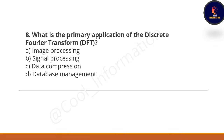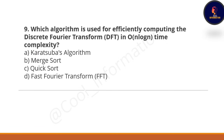Question number 8: what is the primary application of the discrete Fourier transform (DFT)? Option A is image processing, Option B is signal processing, Option C is data compression, and Option D is database management. The correct option is Option B — signal processing is the primary application of the discrete Fourier transform.